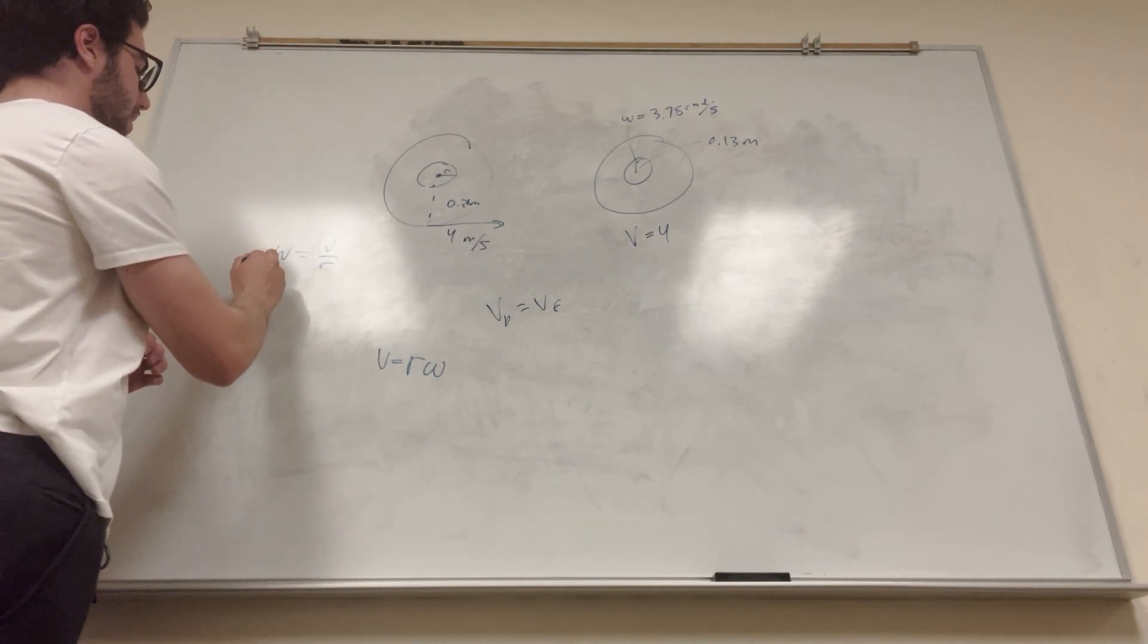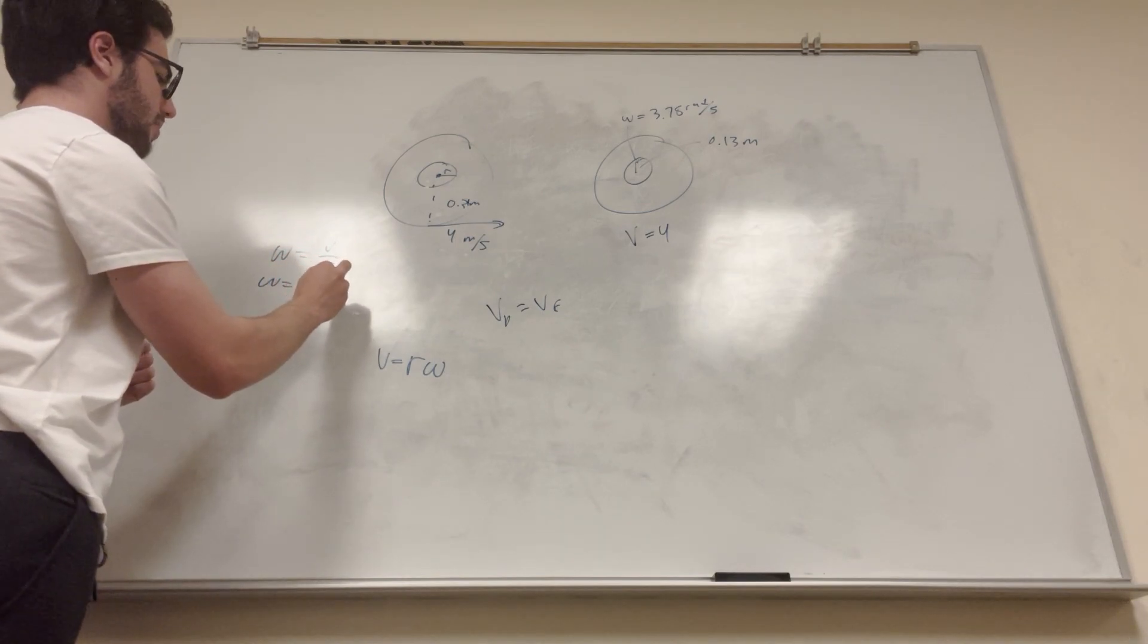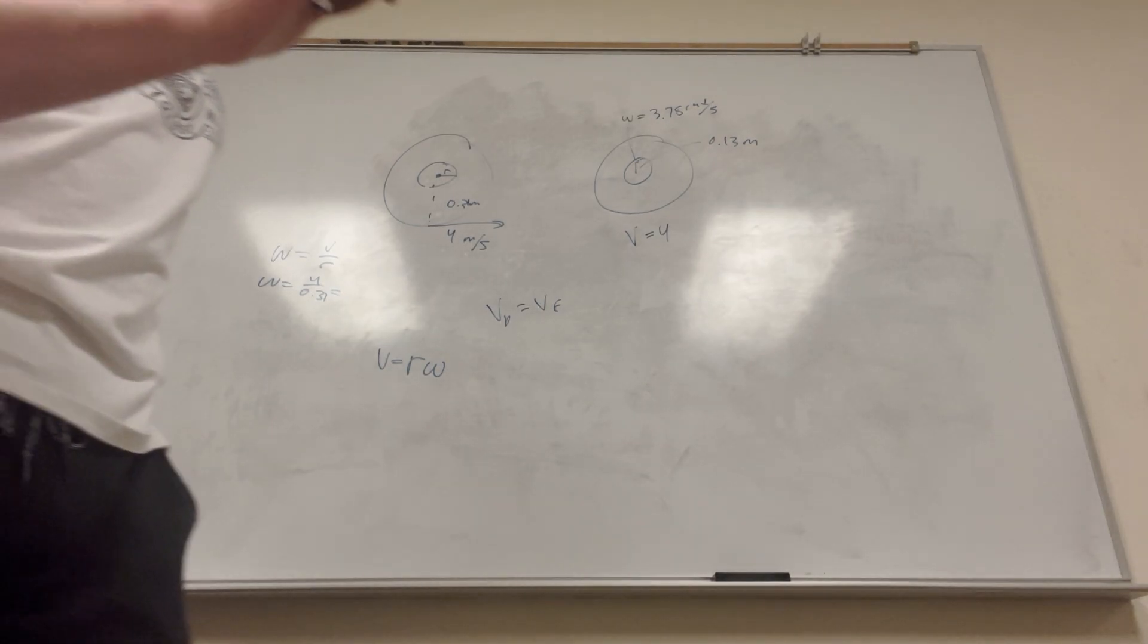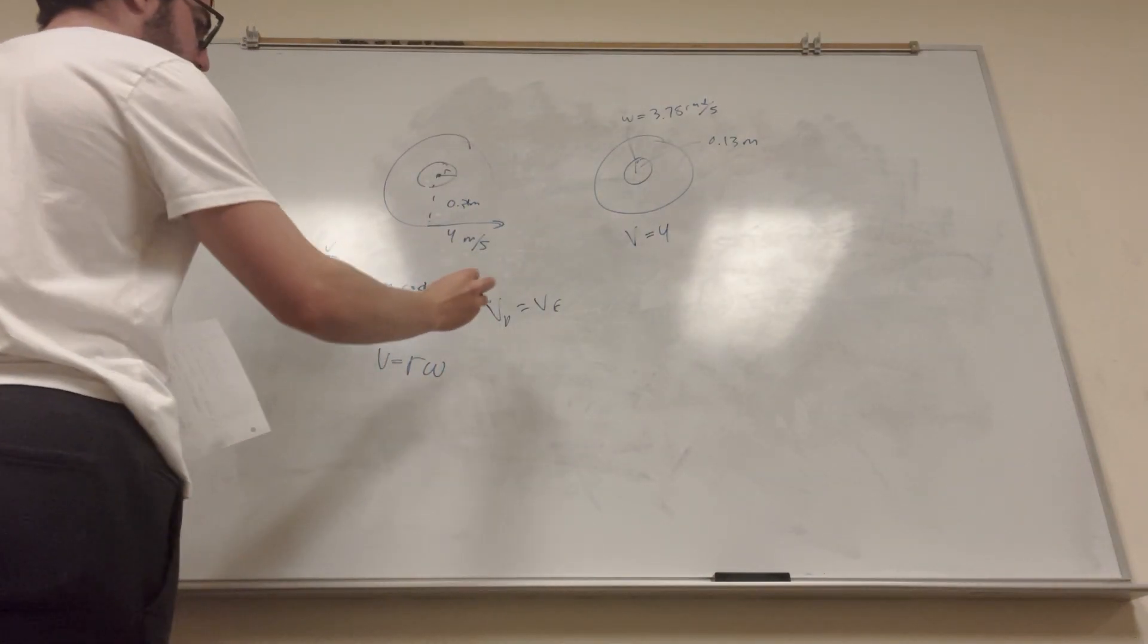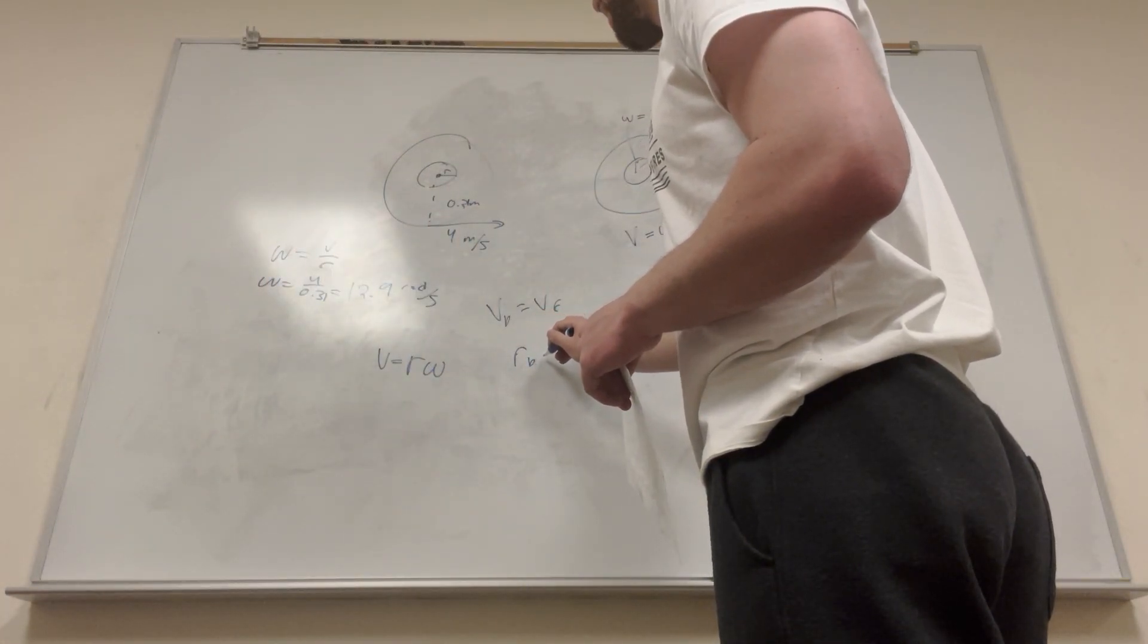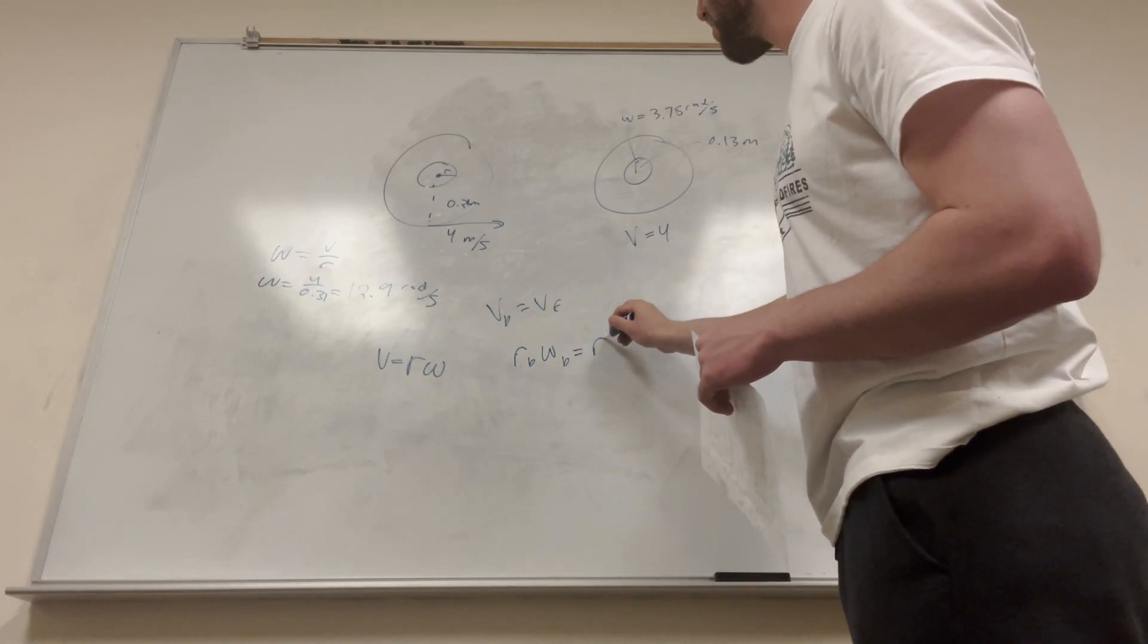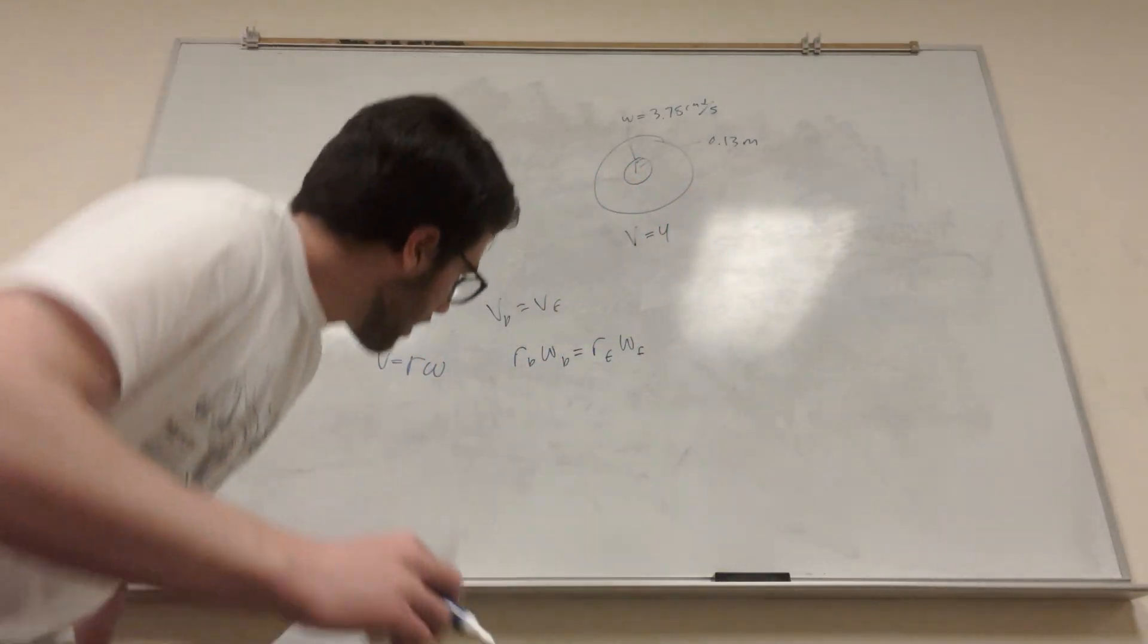So we know that for the little sprocket, is going to be 4 divided by 0.31, which is equal to 12.9. Okay, so then we can go back to this formula. So you can say the radius of the back, or sprocket, times the angular velocity of the back sprocket, is equal to the radius of the front, angular acceleration of the front.